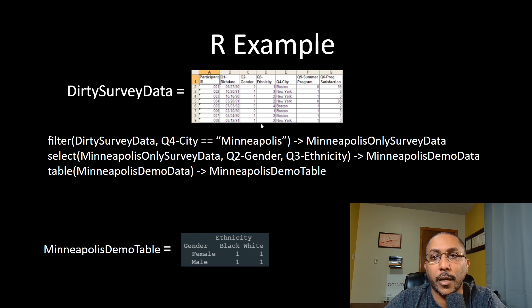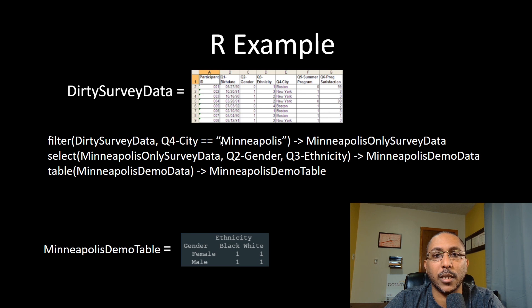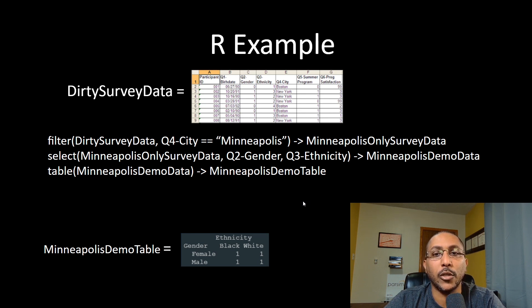After doing something like this in R, you've effectively automated the process of creating that table. If your client runs this survey annually and wants you to put together a report with a gender and ethnicity table, having this code lets you run it in the future with the new dataset and get updated results in seconds. As your code gets longer — creating charts, tables, entire reports — you can automate the entire analysis and report writing.